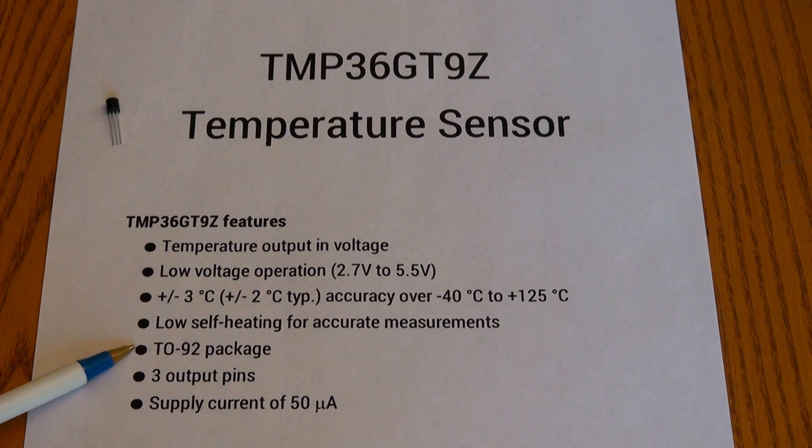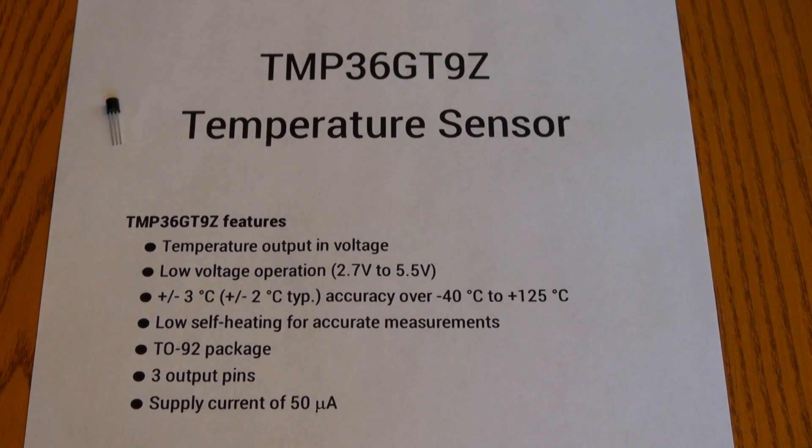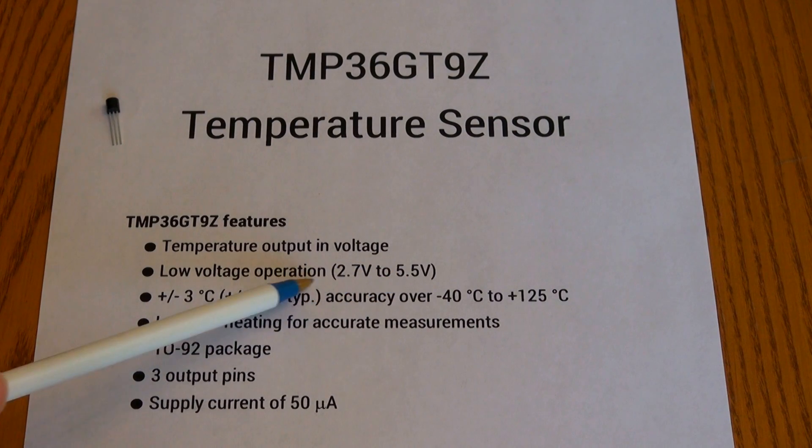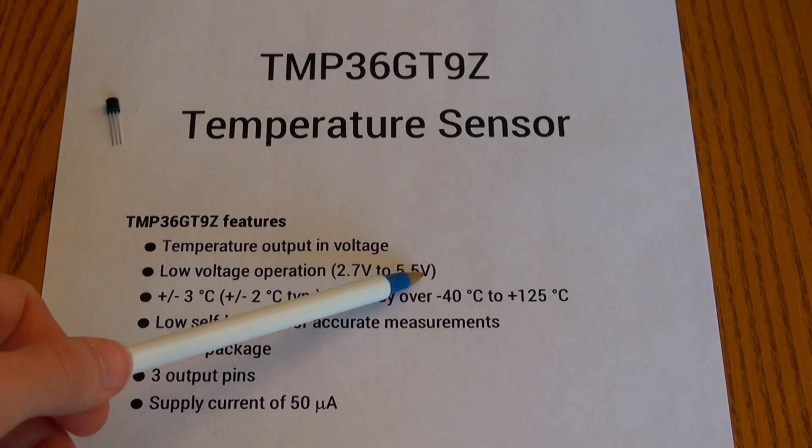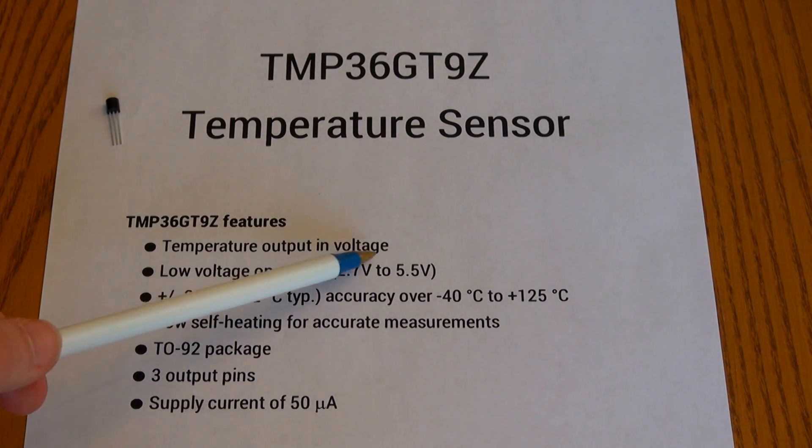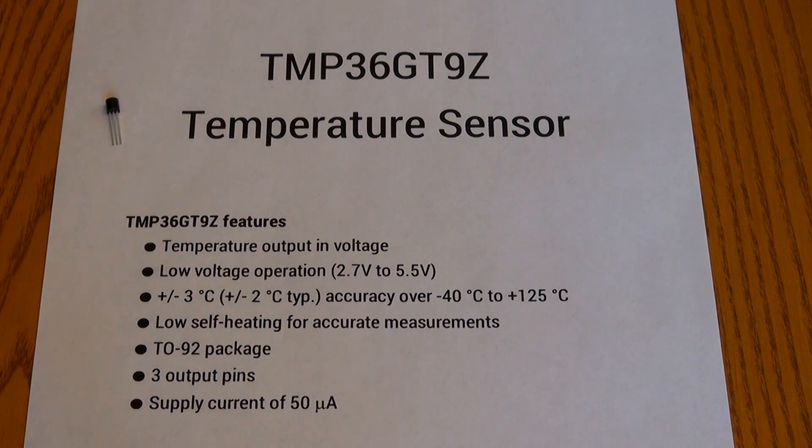It is the TO-92 package, as you can see up there, which is nice and small. It has the three output pins. I already went over the output pins, but I'll explain them again. If you have the flat side facing you, the very left pin is the voltage input, which is the 2.7 volts to 5.5 volts. The middle pin is the voltage output, the analog output, and the very right pin is the ground.